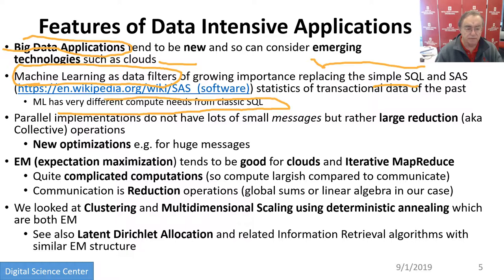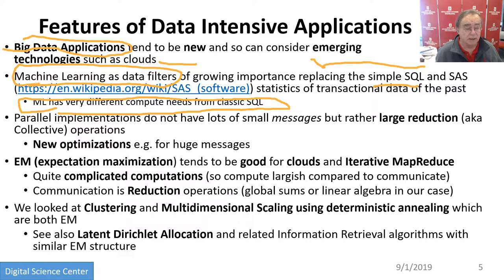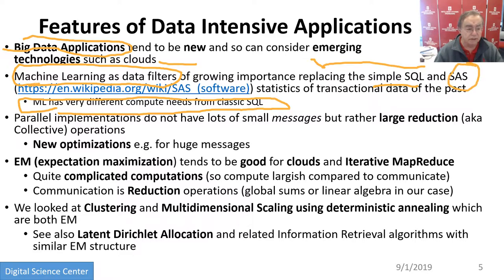Traditional SQL is for very simple applications which didn't use a lot of computing. That's why a traditional data repository was just an Oracle database — it had very little compute power attached, because SQL didn't need compute power. Even SAS was doing simple statistics: calculating averages doesn't need a big computer. But machine learning is very different; it's an iterative algorithm, and the ratio of compute time to data size is much higher.